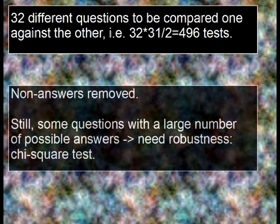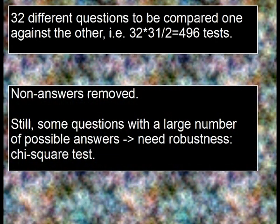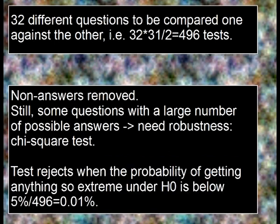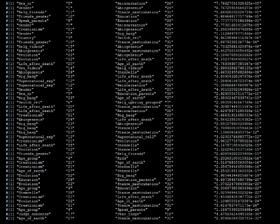I'm left with 32 different questions to be compared one against the other, so there are almost 500 tests — 496. I need robustness, and that means the chi-square test, a frequentist test, which is not to my liking, but beggars can't be choosers. The test rejects when the probability of getting something so extreme under H0 is below 0.01%.